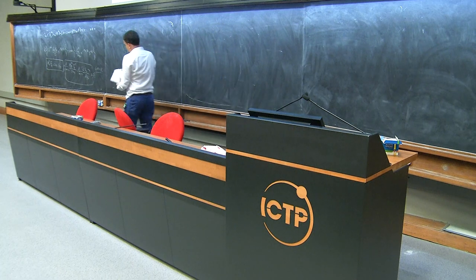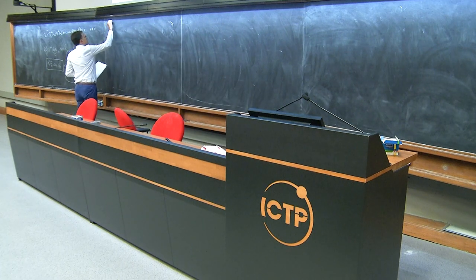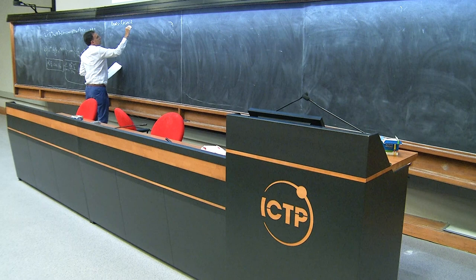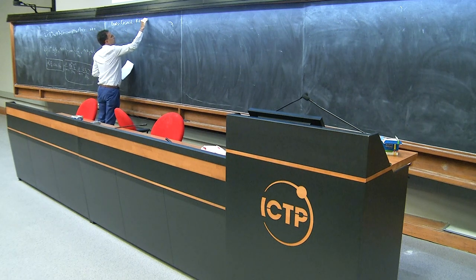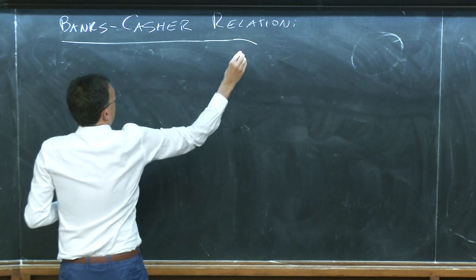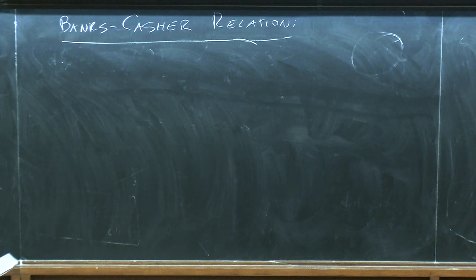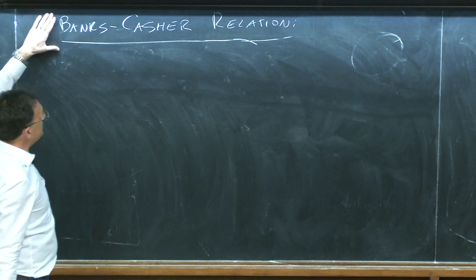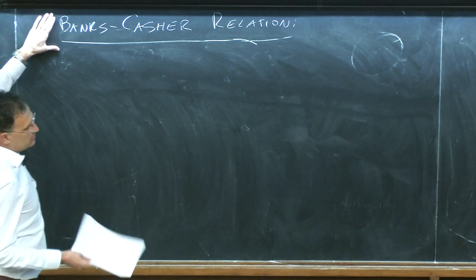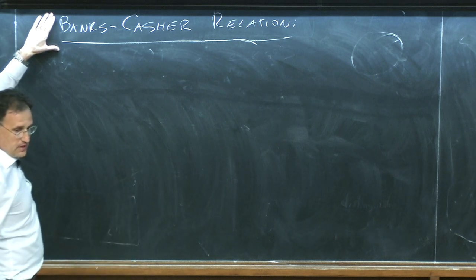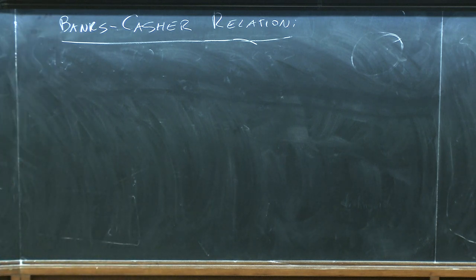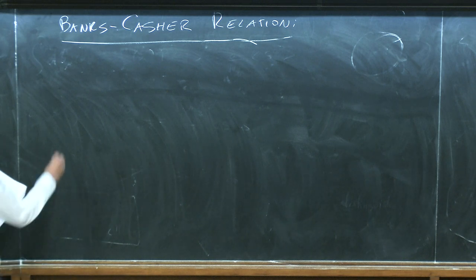The solution is the Banks-Casher relation (1979). This was known since 1979 but one was not able to prove it was useful at the non-perturbative level. Now we will see what changed. We want the chiral condensate.